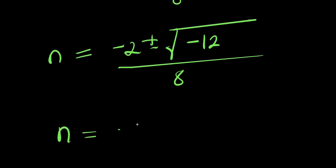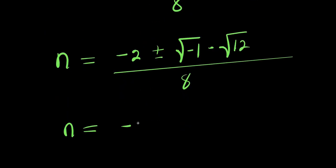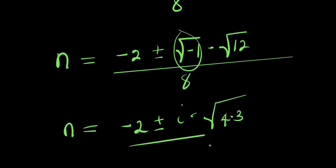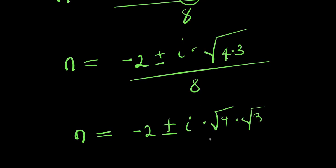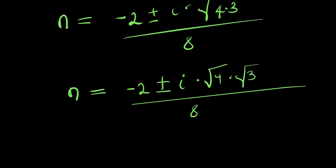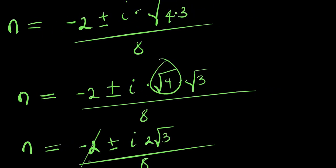So we have n equals (−2 ± √(−1) × √12) / 8. Since √12 = √(4×3) = 2√3, this becomes n equals (−2 ± 2i√3) / 8. Dividing by 2, we get n equals (−1 ± i√3) / 4.